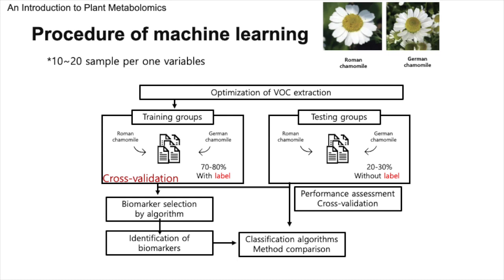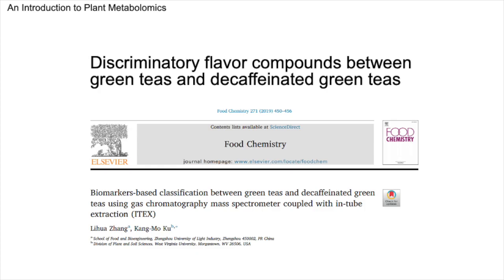After rigorous testing and comparison, we arrive at the pivotal moment — selecting our champion model. This is the algorithm that not only understood our training data but also demonstrated an admirable ability to classify new samples correctly. From now on, we will review a previous publication as an example of classification modeling using a metabolomics dataset.